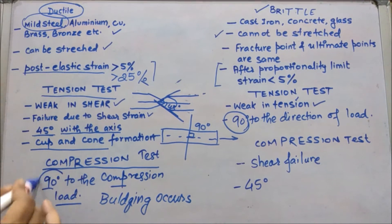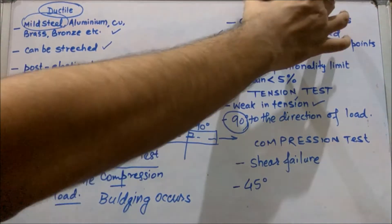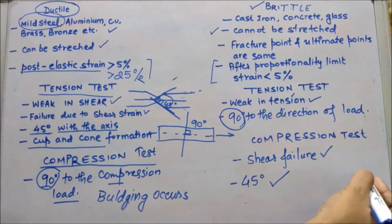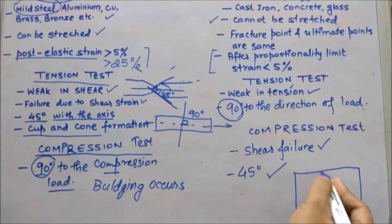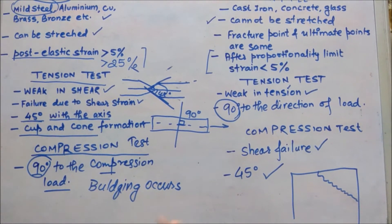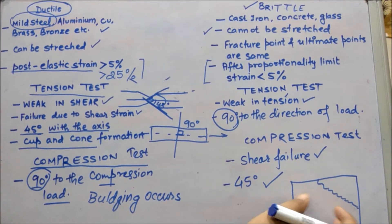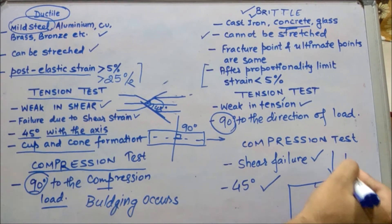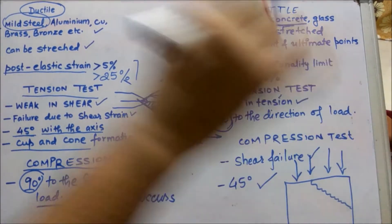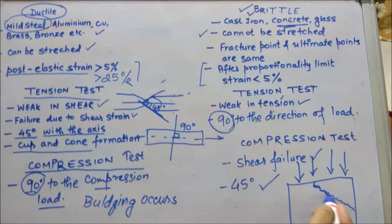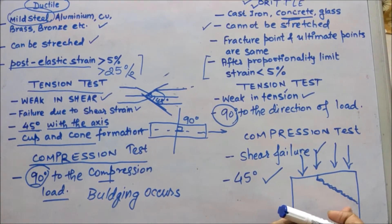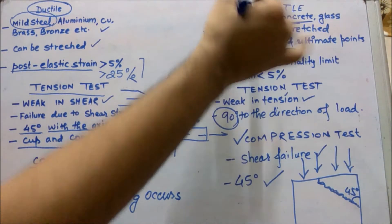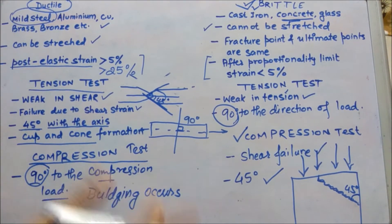In a compression test on brittle material, there is always shear failure occurring at 45 degrees. You would have often seen crack structures developing in the walls of old buildings — those buildings are made of concrete, which is a brittle material. Since the walls are loaded by beams or floors above, the cracks develop at an angle of 45 degrees, as the material is under compression and is brittle.